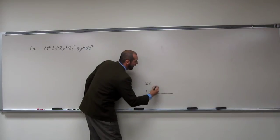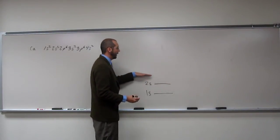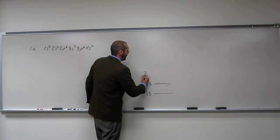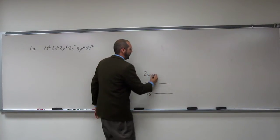2s. 2s, and how many orbitals are in it? 1. 1, very good. And the next one up? 2p. 2p. How many orbitals? 3. 3.